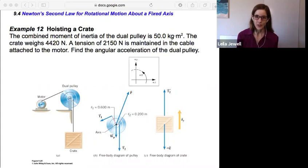Example 12, hoisting a crate from section 9.4, Newton's second law for rotational motion about a fixed axis.